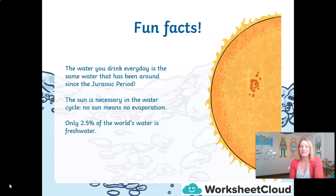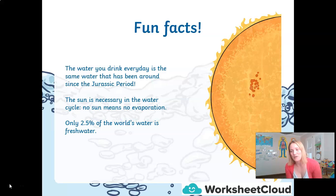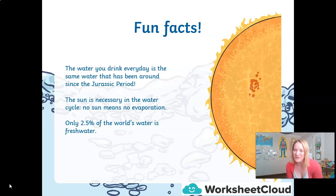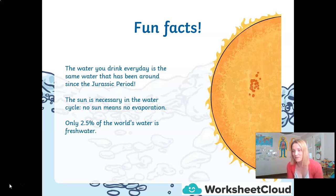I thought I would give you some fun facts about water. One that my students love is that the water you drink from your tap today is the same water that's been around since the Jurassic period — when the dinosaurs walked the earth. Because it is continually recycled in the water cycle, there's no such thing as really new water. I always tell my class: enjoy it, you're drinking dinosaur wee! The sun is exceptionally important in the water cycle, as is the wind — there's no evaporation without the sun, and the hotter the day the quicker it occurs.